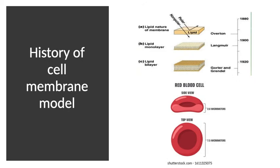In 1920, two scientists, Gorter and Grendel, extracted the plasma membrane of red blood cells. Back then it was known that red blood cells contain only the plasma membrane with no organelles inside, since their function is just to transport oxygen and carbon dioxide. Using microscopy and magnification calculations, they estimated the total surface area of red blood cells and found that the layer of phospholipid extracted was actually double the surface area of the red blood cell.